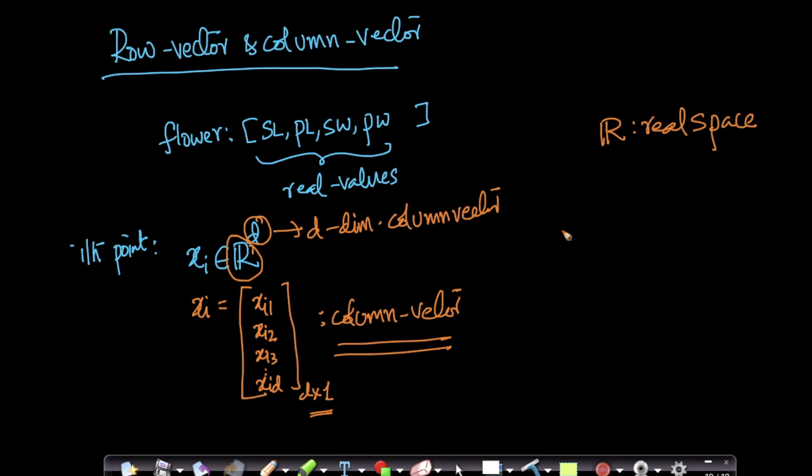So given any vector, for example, for a given flower, let us assume I have a flower which is represented as 2.1, 3.2, 1.6, 4.2. So of course, sepal length, sepal width, petal length, petal width. The four features that we have.